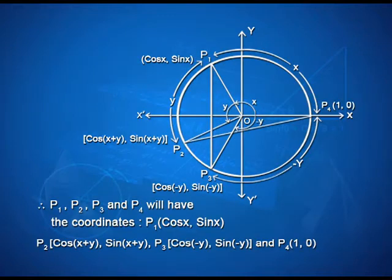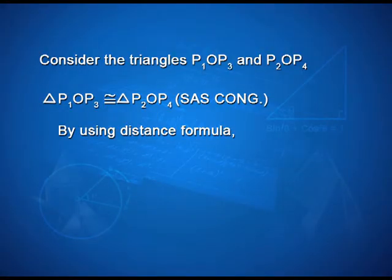Therefore, P1, P2, P3 and P4 will have the coordinates: P1 as (cos x, sin x), P2 as (cos(x+y), sin(x+y)), P3 as (cos(-y), sin(-y)), and P4 as (1, 0) respectively. Consider the triangles P1OP3 and P2OP4. We can see that triangle P1OP3 is congruent to triangle P2OP4, using the side-angle-side congruency.